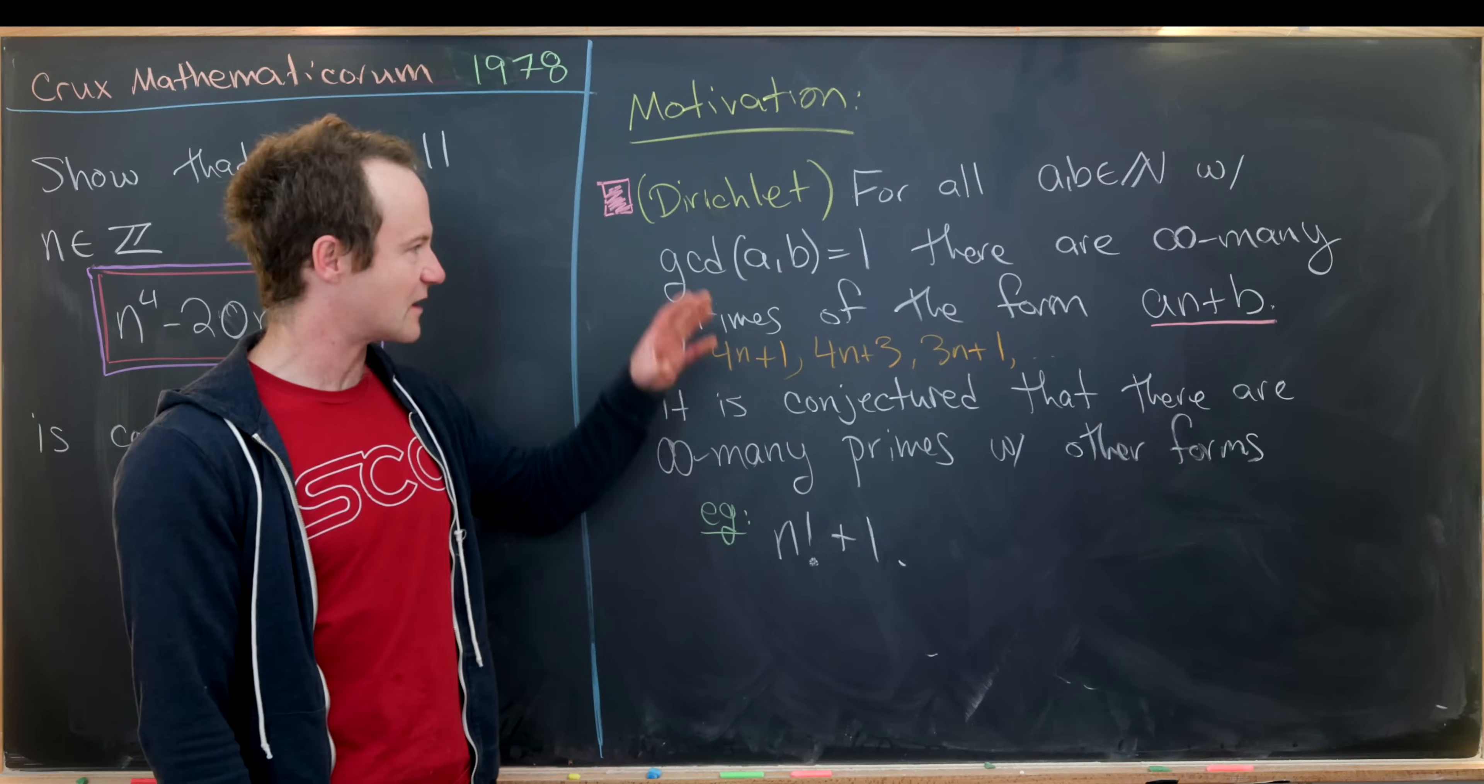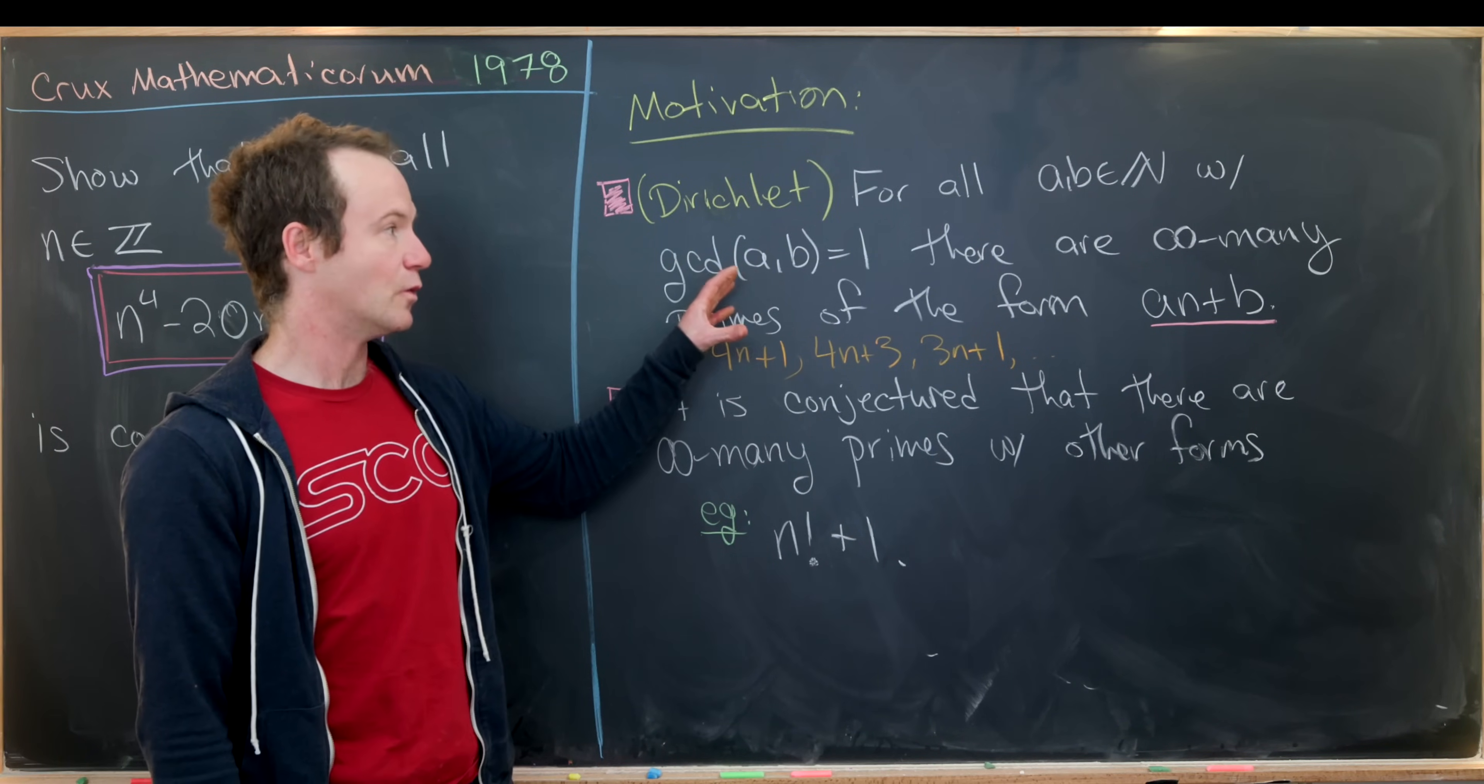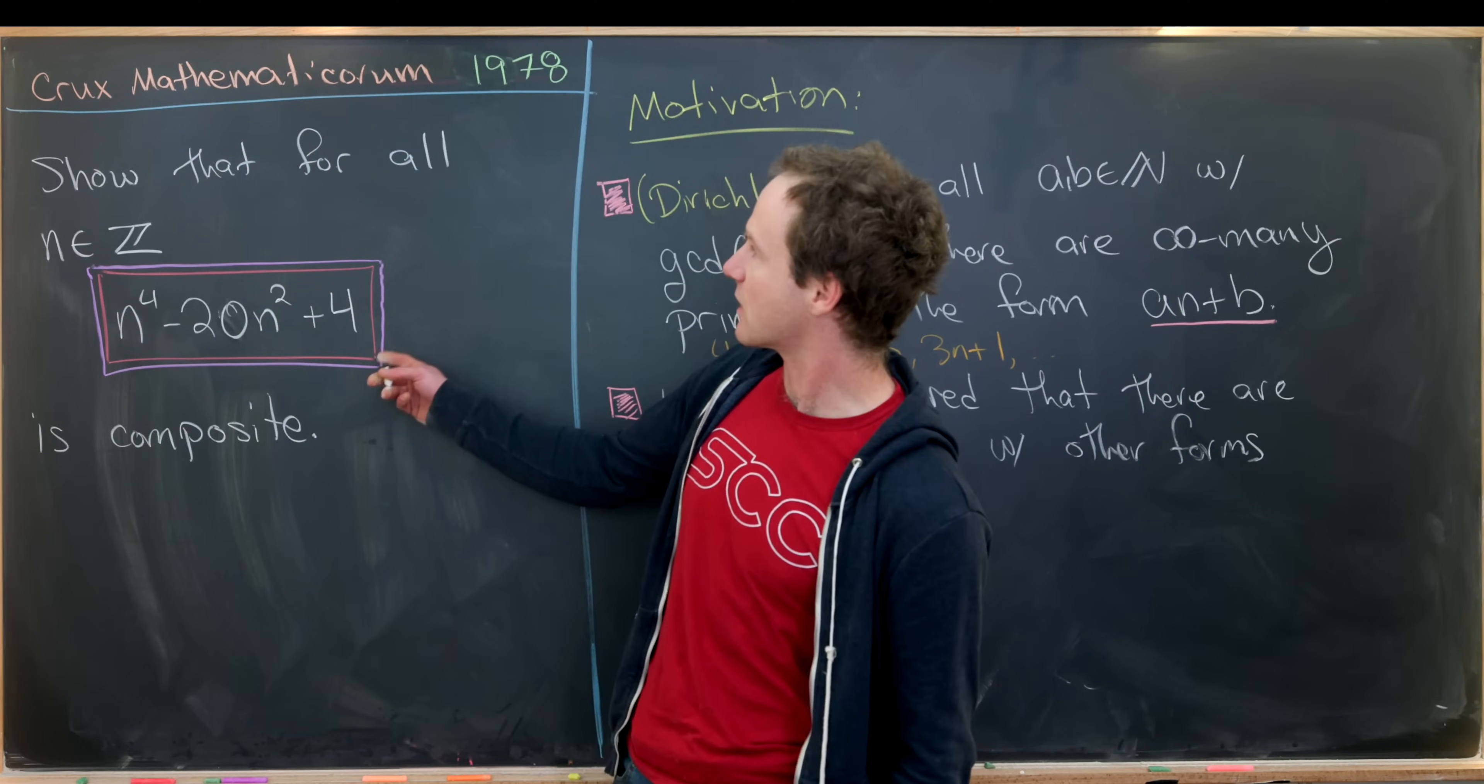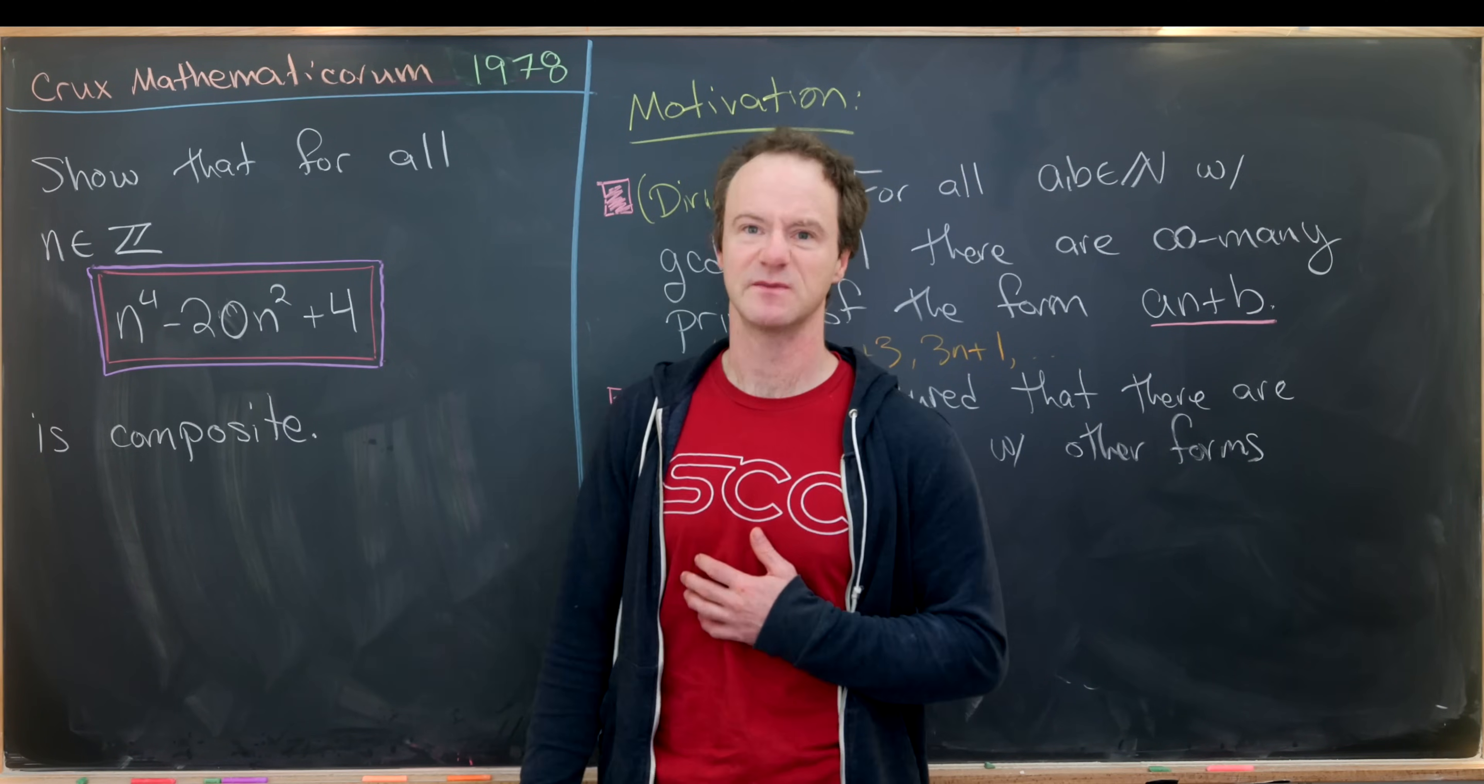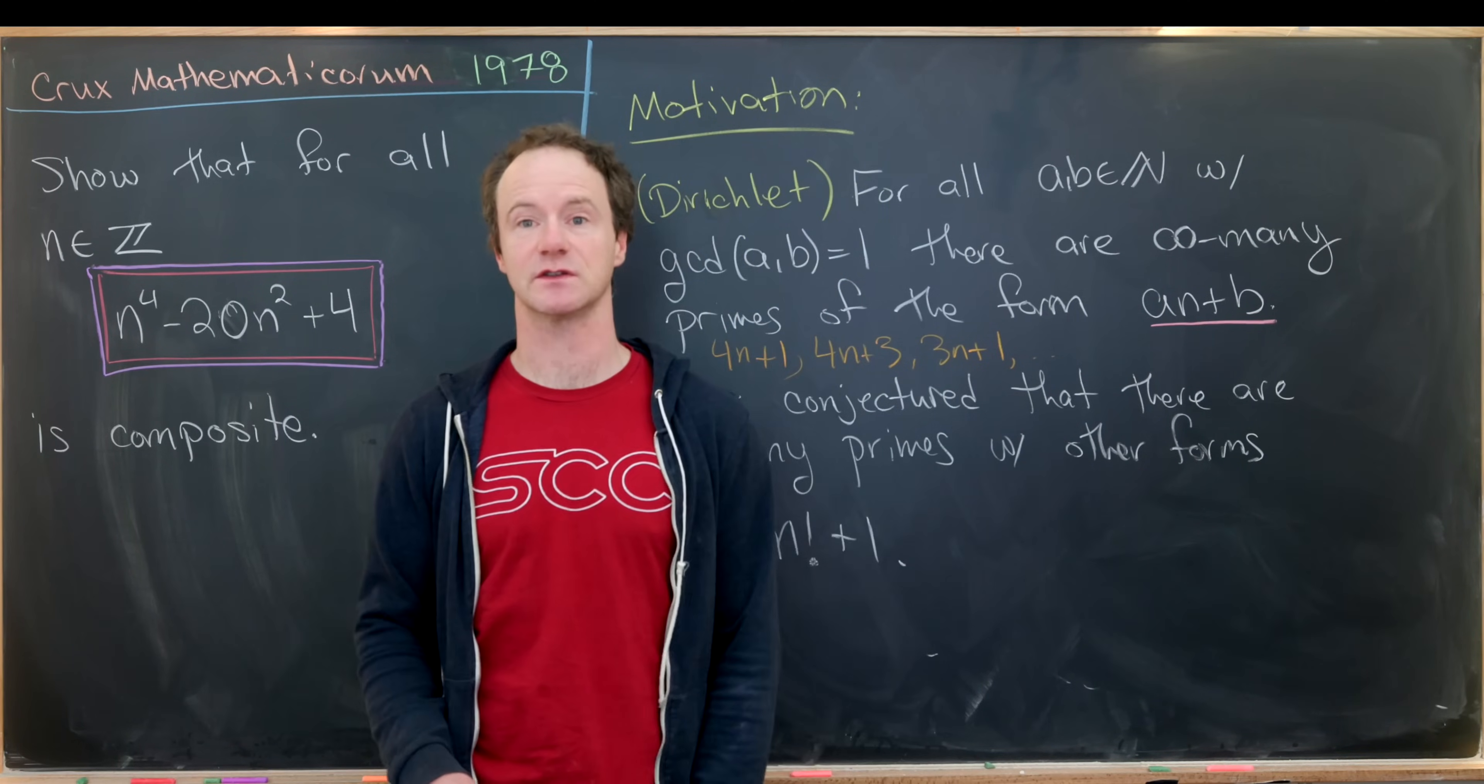So this is kind of built out of these two ideas. In the linear case, we always have infinitely many primes, although in the polynomial case, there is a possibility that we don't get any primes. In other words, we always get a composite. Now that we've motivated this problem, let's look at the solution.